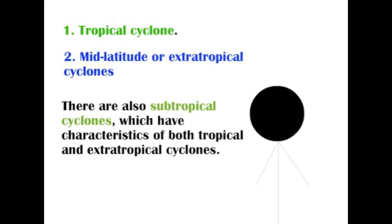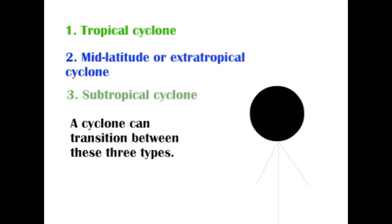There are also subtropical cyclones, which have characteristics of both tropical and extra-tropical cyclones. A cyclone can transition between these three types.